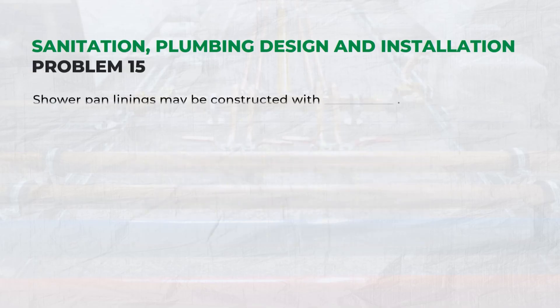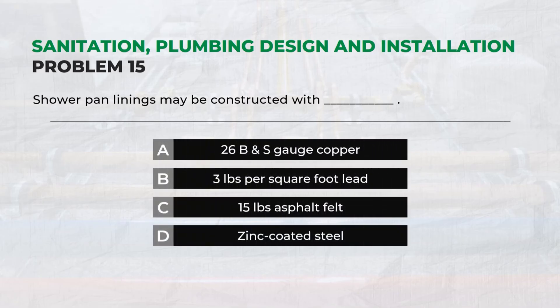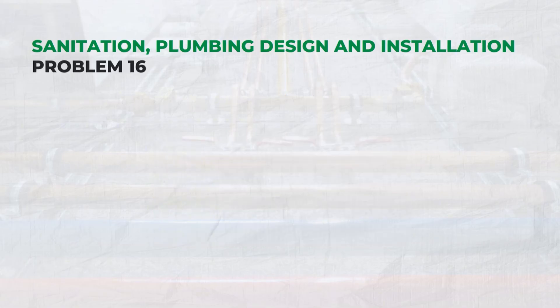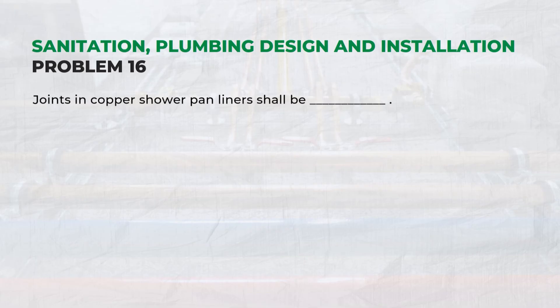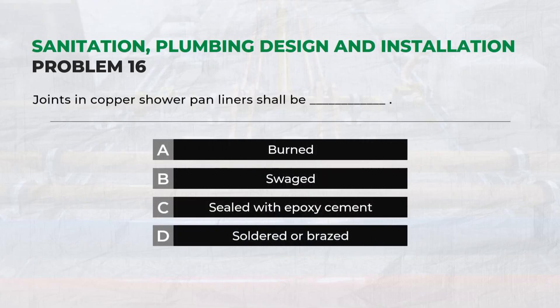Shower pan linings may be constructed with — Answer: C. 15 pounds asphalt felt. Pipe joint connections may be — Answer: D. Soldered or brazed.